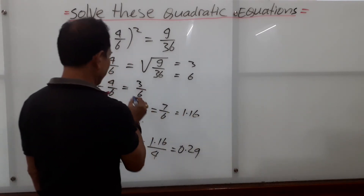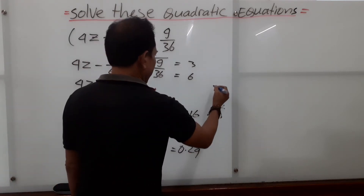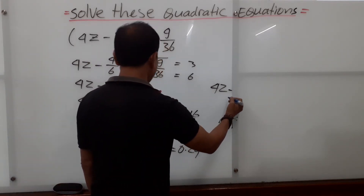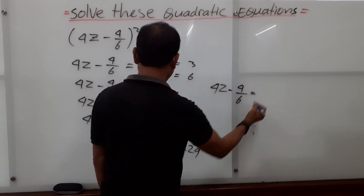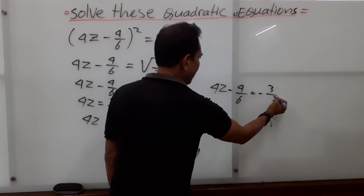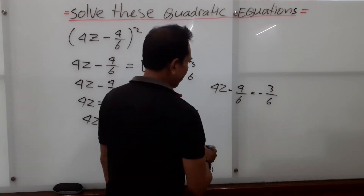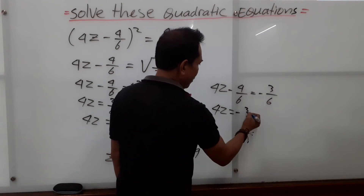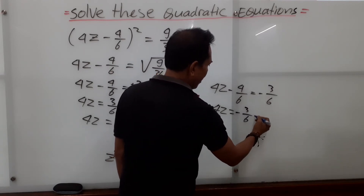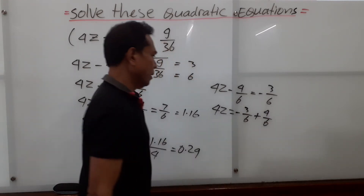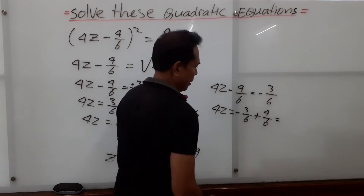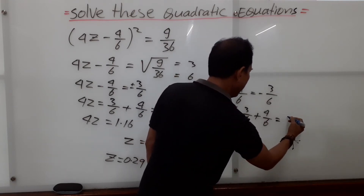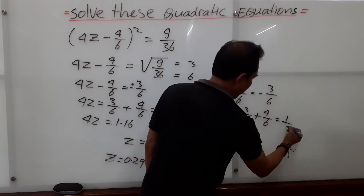But we also have the plus-minus here. So we bring in the negative case: 4z minus 4 over 6 equals minus 3 over 6. Moving the 4 over 6 to the other side, we get 4z equals minus 3 over 6 plus 4 over 6, which becomes 1 over 6.